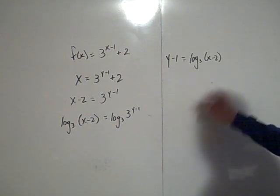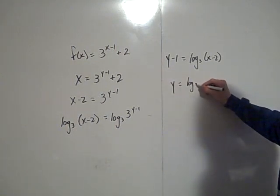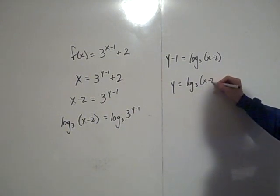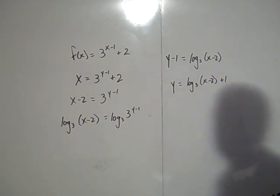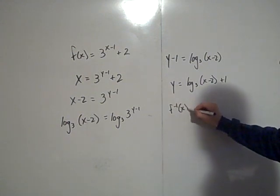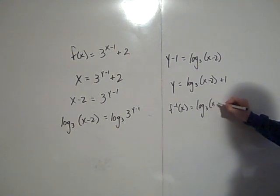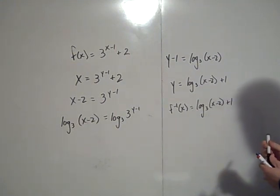Then to get y by itself, you just add one to both sides, so you have y equals the log base 3 of x minus 2 plus 1. You can call this f inverse, so f inverse of x is the log base 3 of the quantity x minus 2 plus 1.